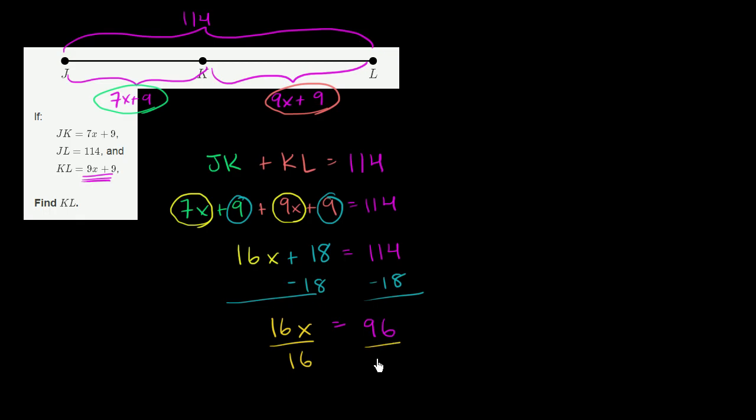And now we just divide both sides by 16. Divide both sides by 16. And let's see. This looks like 96 divided by 16. We could do it explicitly, but it looks like it's going to be 6. 6 times 10 is 60. 6 times 6 is 36. 60 plus 36 is 96. So we get x is equal to 6.